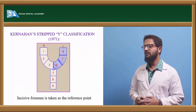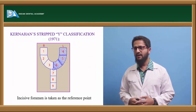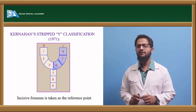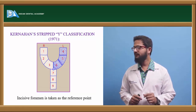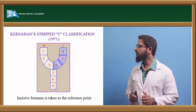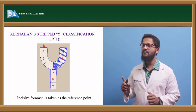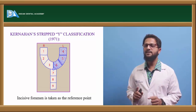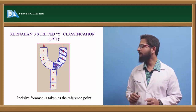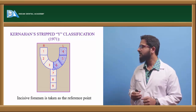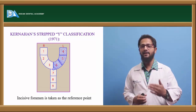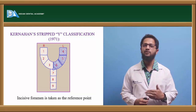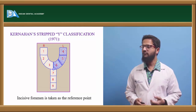Coming to Kernahan's Striped Y classification, given in 1971. They denoted the classification in the form of a Y, taking the incisive foramen as a landmark, and assigned numbers 1 through 9. Numbers 1 and 4 indicate clefts of the lip; 2 and 5 indicate clefts of the alveolars; 3 and 6 indicate clefts of the hard palate anterior to the incisive foramen; 7 and 8 indicate clefts of the hard palate posterior to the incisive foramen; and 9 indicates clefts of the soft palate.